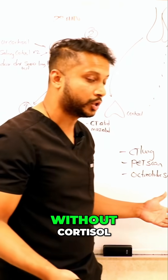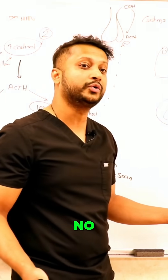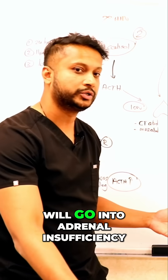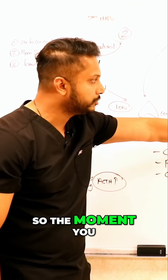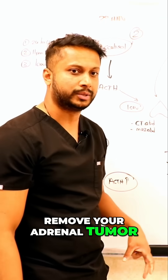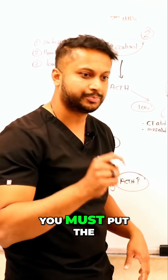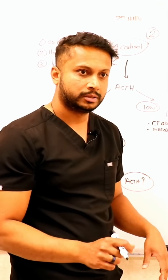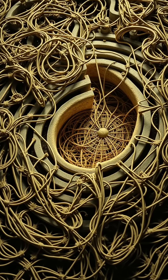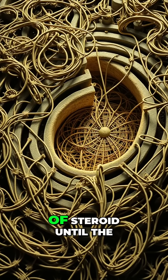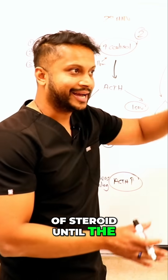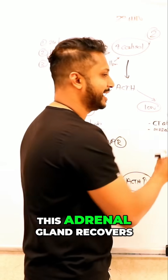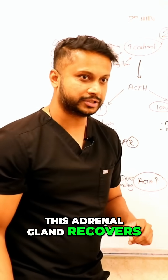So once you remove the tumor, you've completely deprived this patient of cortisol. And can you live without cortisol? No, you can't. So immediately the patient will go into adrenal insufficiency. The moment you remove the adrenal tumor, you must put the patient on cortisol — you have to put them on some form of steroid until the HPA axis takes over and the remaining adrenal gland recovers.